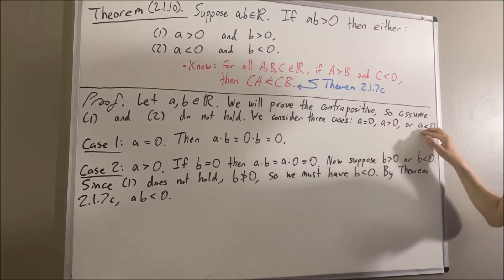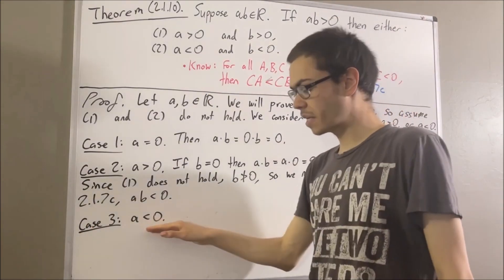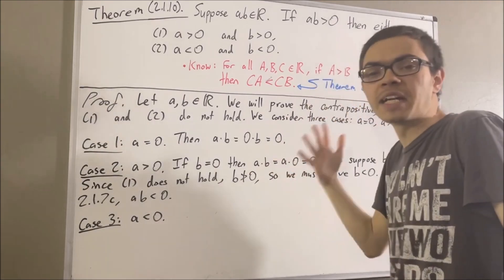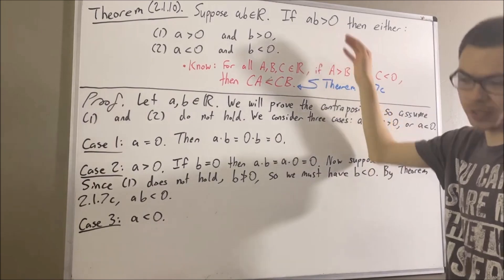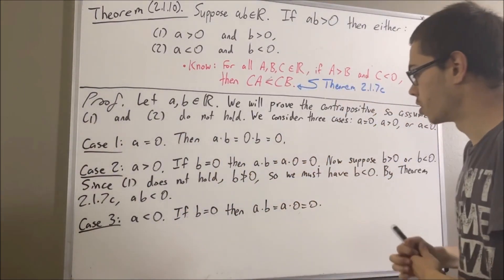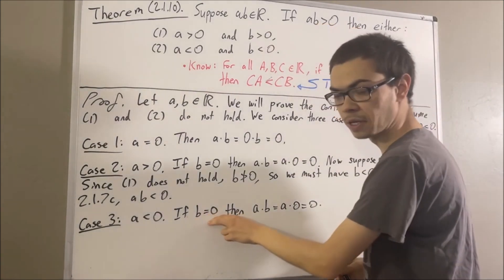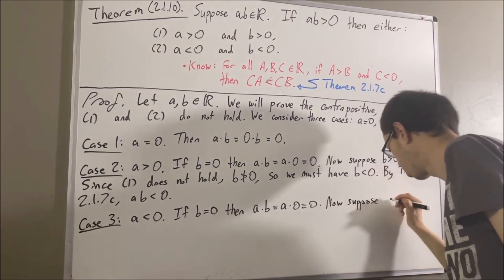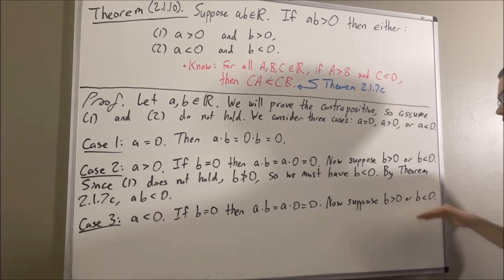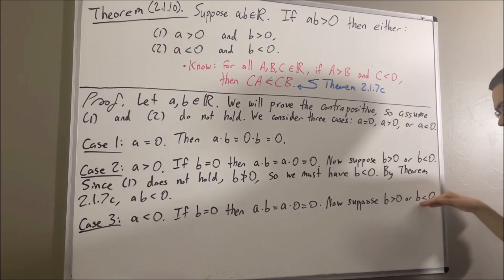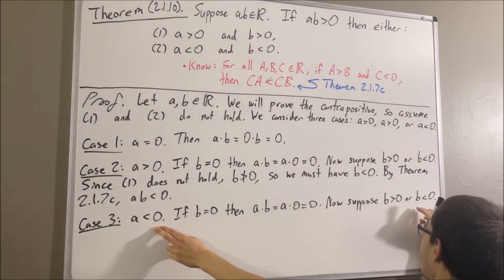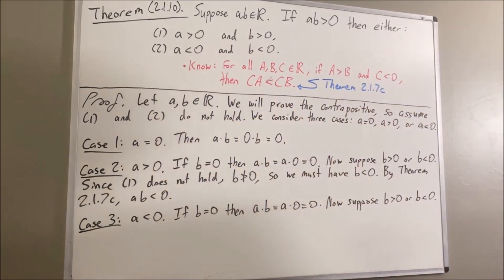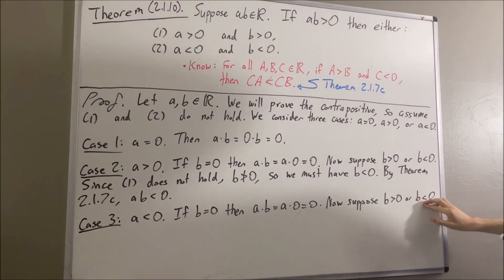Now let's move on to our final case where A is less than zero. We are again going to consider what the possibilities of B could be. If B is equal to zero, then A times B is equal to zero — in other words, AB is not greater than zero. Now we cannot have the case that B is less than zero. The reason is that if B were less than zero, then A is less than zero and B is less than zero, which means condition two would hold. But condition two does not hold, so we would get a contradiction. Therefore B is not less than zero, which means B must be greater than zero.